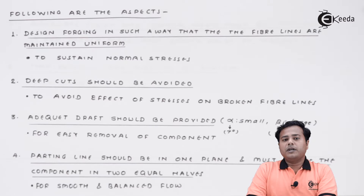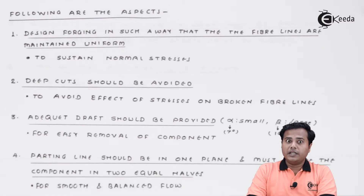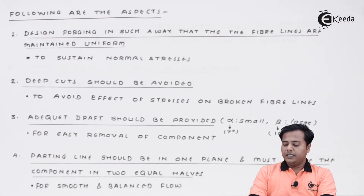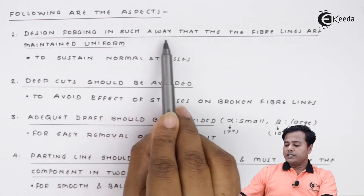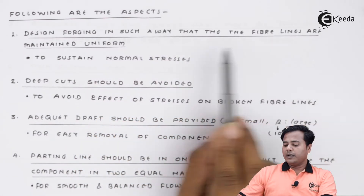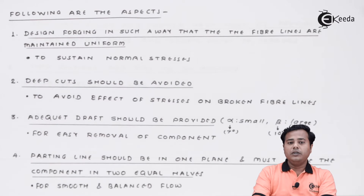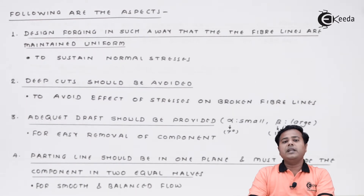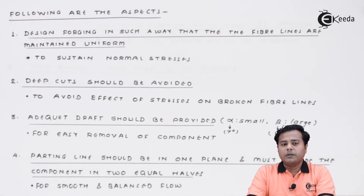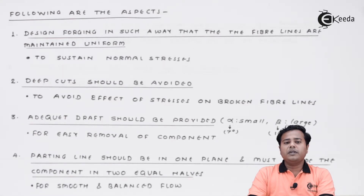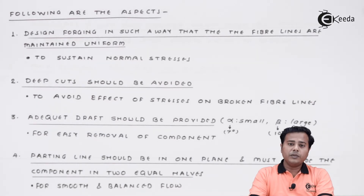Now let us look at the core part of this topic — the design aspects that we need to consider. The very first is to design forging in such a way that the fiber lines are maintained uniform. The fiber lines are essentially the layers of metals made up of fibers. If these fiber lines are naturally made properly, in sequence and uniformly, they will hold their natural strength.